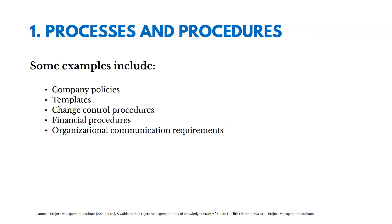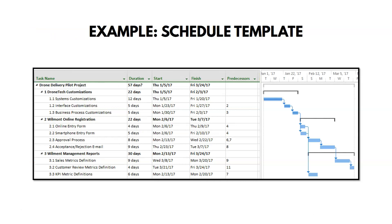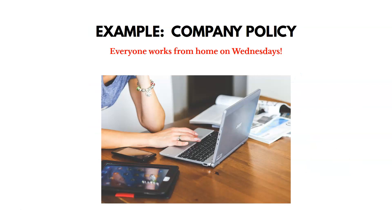Some of the processes and procedures could include things like company policies, templates, change control procedures, financial procedures, and organizational communication requirements. An example might be a schedule template — something the organization has asked all project teams to use. Another example could be company policies about working from home. Maybe everybody on Wednesdays is supposed to work from home — that certainly could affect how we manage our project. We can't have customers coming into our office on Wednesdays because nobody's going to be there.